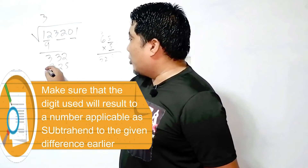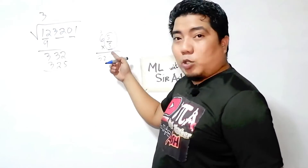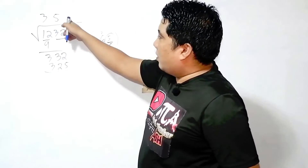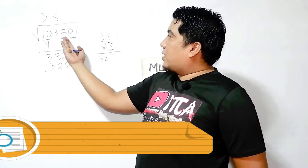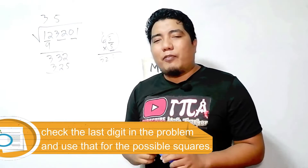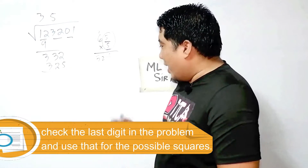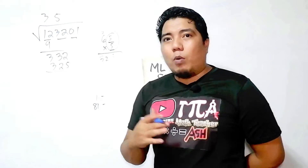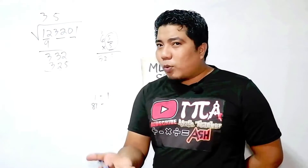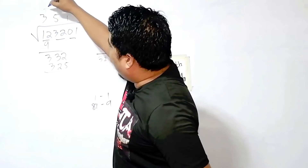So 325 is applicable to be subtracted. Now, as long as you have established this, that 5 will be your second digit. For the last digit, since this is the last group of two digits, you just look at the last digit, which is 1. Ask yourself: what are the perfect squares from 1 to 100 that end with 1? That is 1 and 81. The square root of 1 is 1; the square root of 81 is 9. So your answer could be 351 or 359.